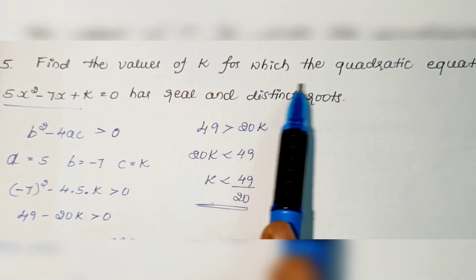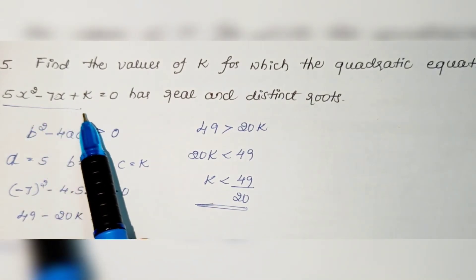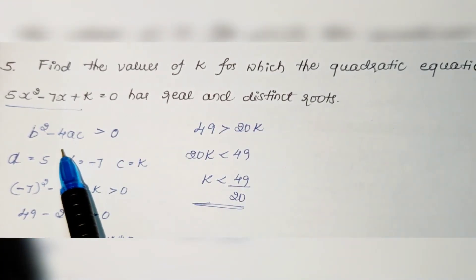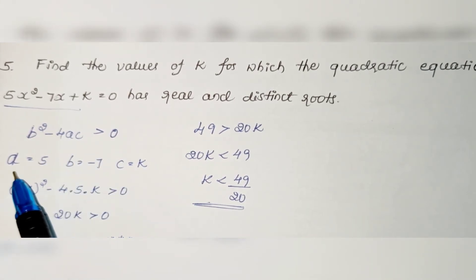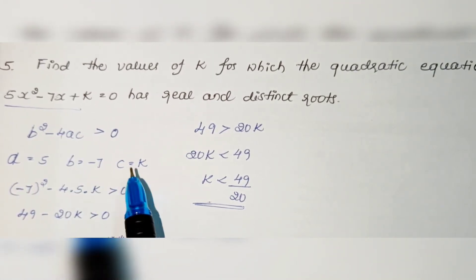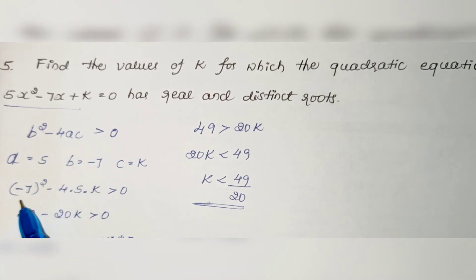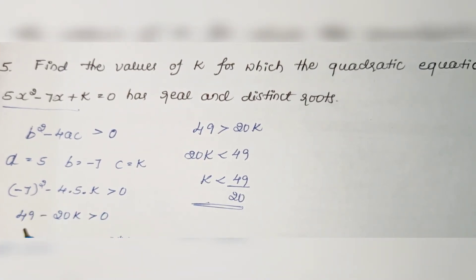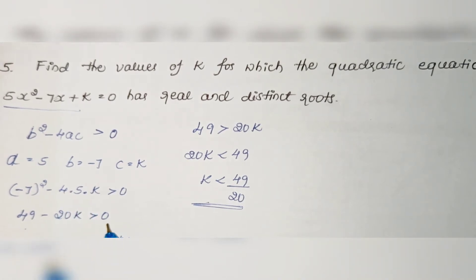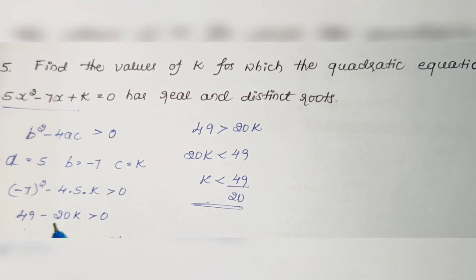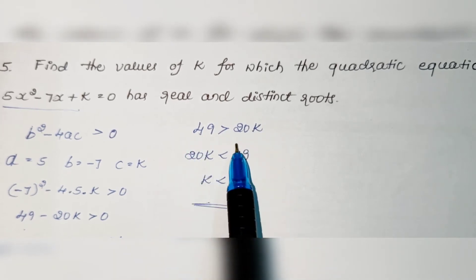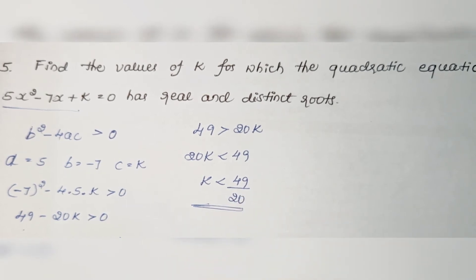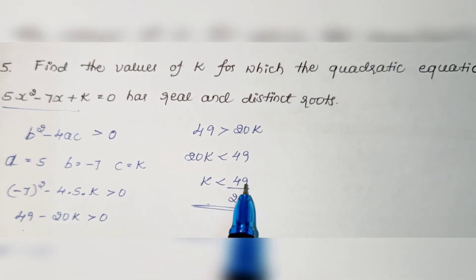Find the values of k for which 5x² − 7x + k = 0 has real and distinct roots. The criteria is that the discriminant must be greater than zero. Here a = 5, b = −7, c = k. So (−7)² − 4(5)(k) > 0, giving 49 − 20k > 0, therefore 20k < 49, so k < 49/20. The value of k must be less than 49/20.